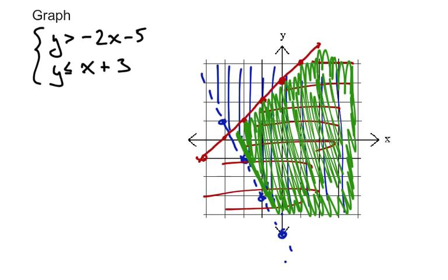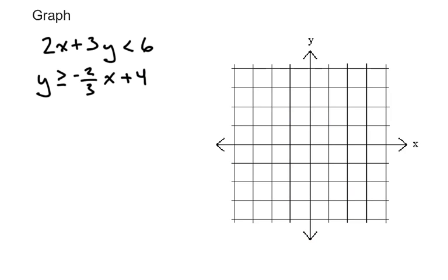And that is how we graph an inequality. So graph both parts, or as many parts as there are, and the solution is going to be the region that overlaps. So let's try it again here. We have a system of 2x plus 3y is less than 6. Well, that's in standard form, so we can graph it this way.